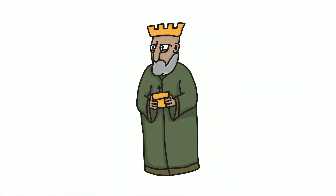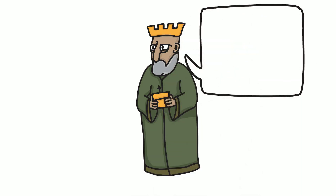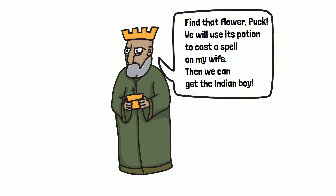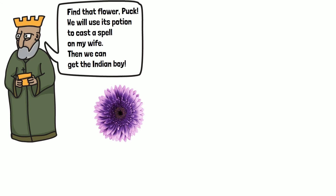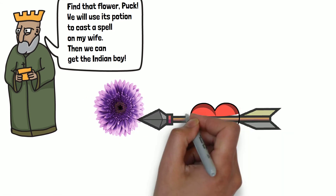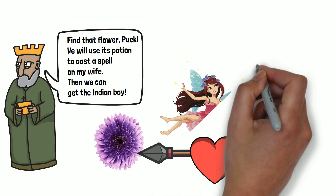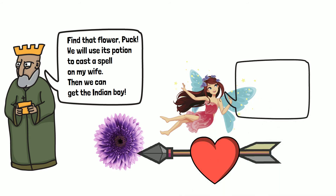Titania storms off and Oberon hatches a plan to poison Titania with the juices from a specific flower that was once struck by one of Cupid's stray arrows. If the nectar from this flower was rubbed on a person's eyes whilst they slept, once they woke up they would fall in love with the first thing that they saw. Oberon plans to use the potion to make Titania fall in love with something hideous, then he will be able to steal the changeling boy. He sends Puck away to find the flower.